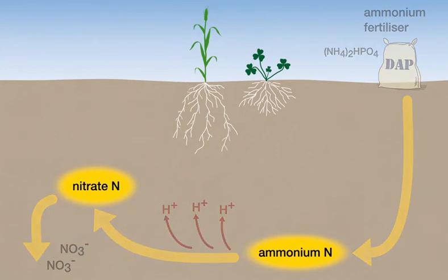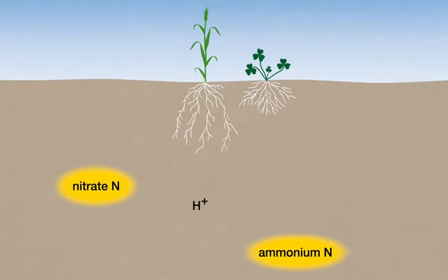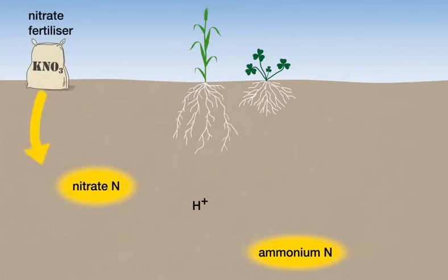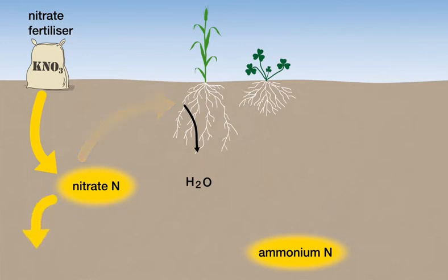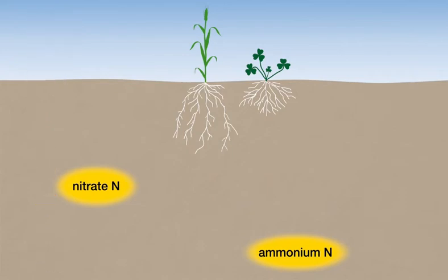Different nitrogen fertilizers follow different chemical pathways as they break down in the soil and contribute different amounts of hydrogen ions. For example, nitrogen from potassium nitrate fertilizer enters the cycle as nitrate. If the nitrate is taken up, there is a liming effect because the hydroxide ion excreted by the plant roots will neutralize a hydrogen ion from the soil. If the nitrate is leached, there is no liming effect, but also no soil acidification because no hydrogen ions are contributed to the soil with the fertilizer.